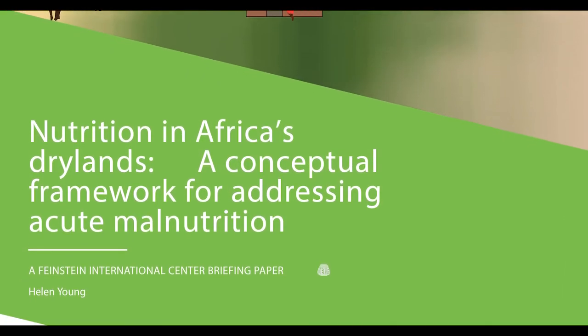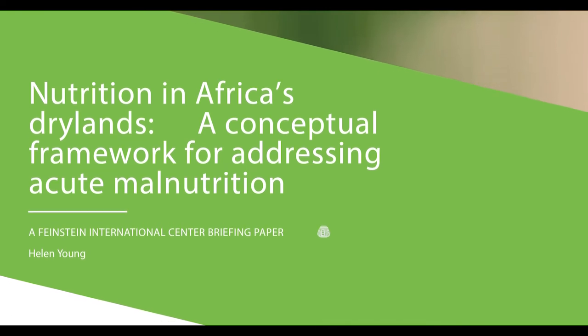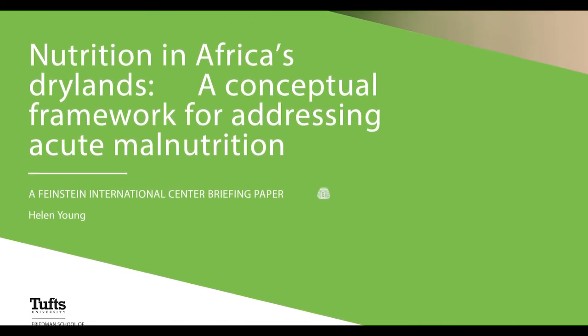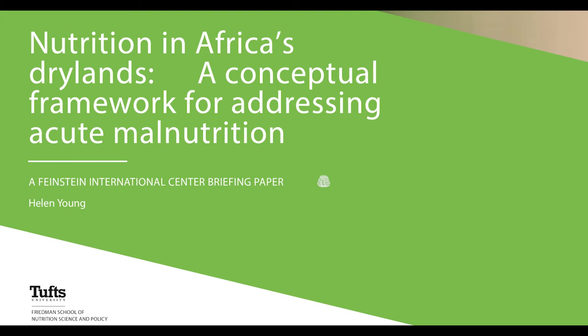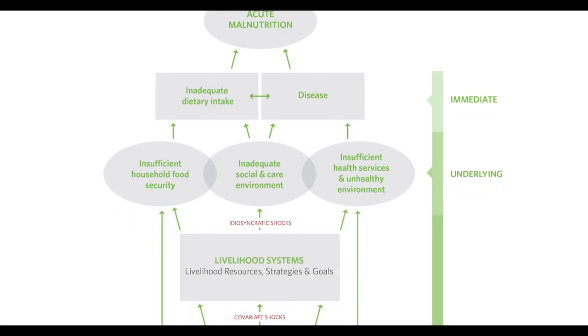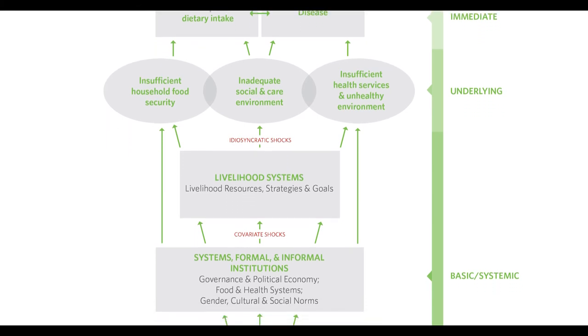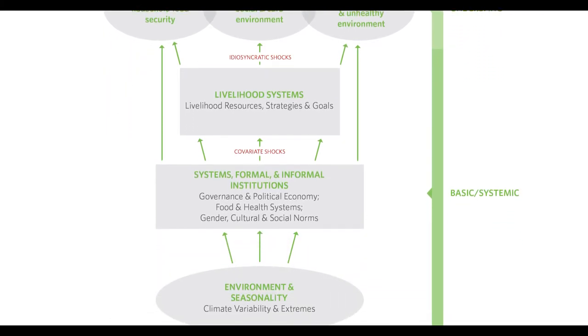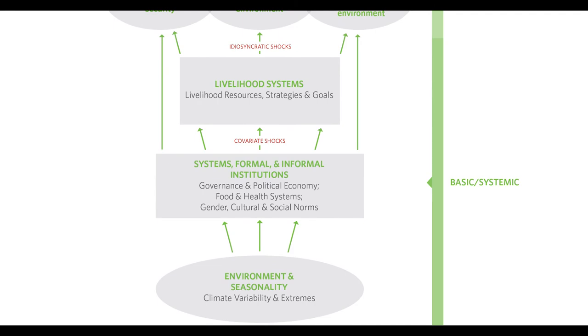Building on this research, Tufts University have recently produced a new report, 'Nutrition in Africa's Dry Lands: A Conceptual Framework for Addressing Acute Malnutrition.' This proposes an adapted framework specific to Africa's dry lands. The adapted framework preserves the immediate and underlying drivers of acute malnutrition and recognises the synergism between them. It also reconceptualises the basic, more systemic drivers of acute malnutrition, which include three interlinked areas: environment and seasonality, systems and institutions, and livelihood systems.